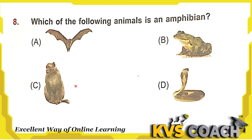Next question: which of the following animal is an amphibian? Option A is bat — this is an aerial animal. Option B is frog — this is an amphibian animal. Option C is monkey — this is an arboreal animal. Option D is snake — this is a reptile. So the right answer for the amphibian animal is option B — frog.